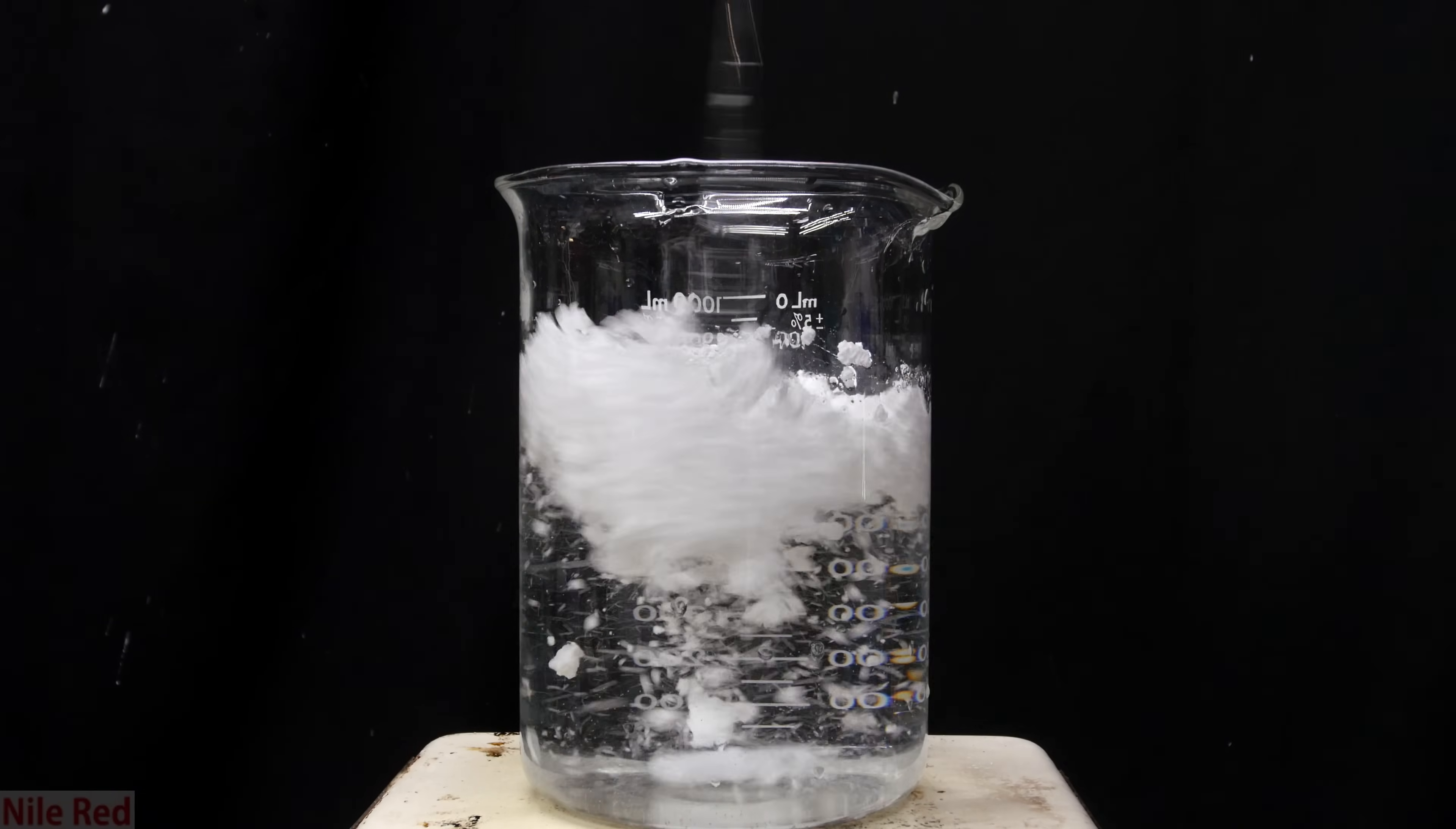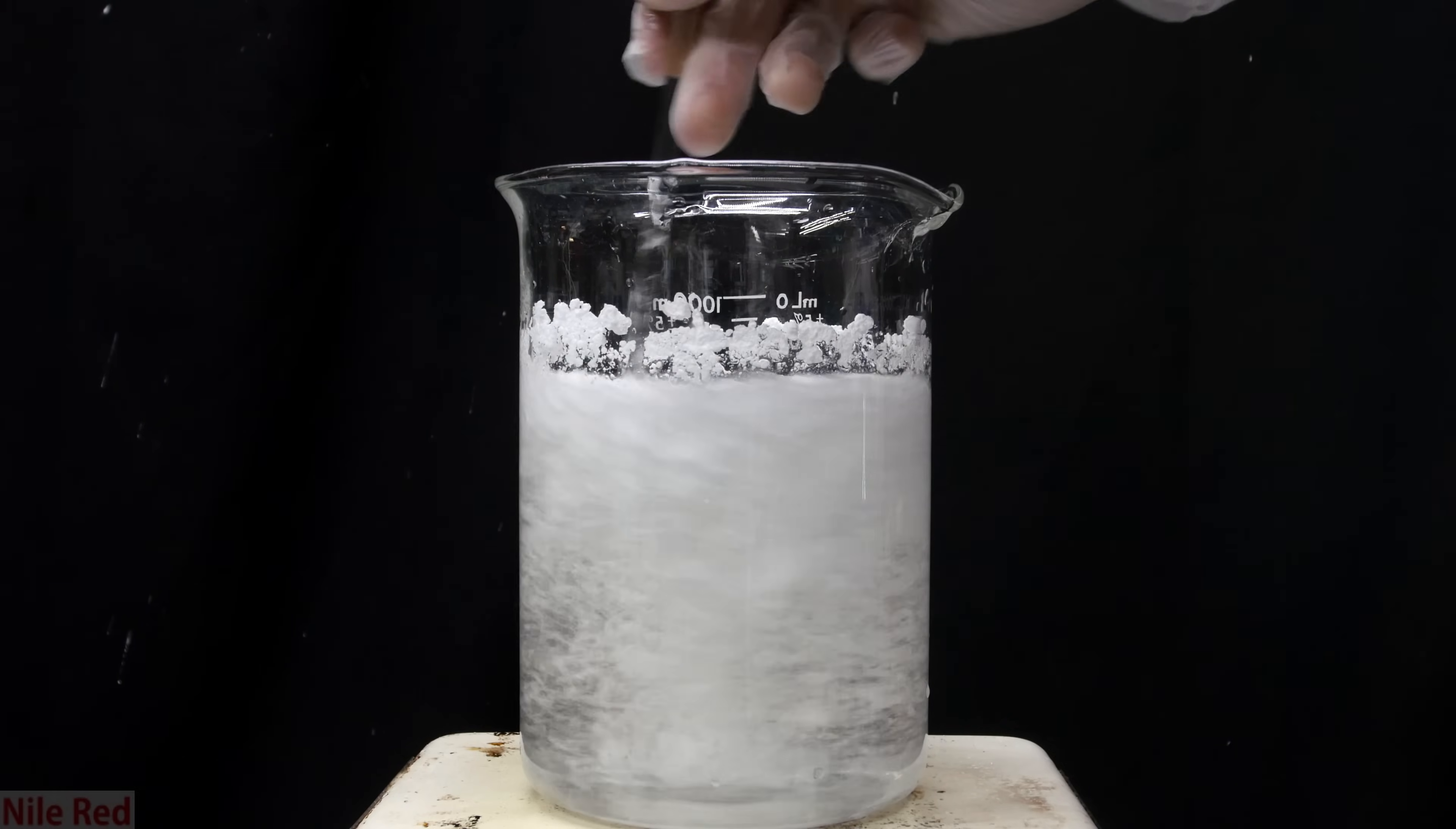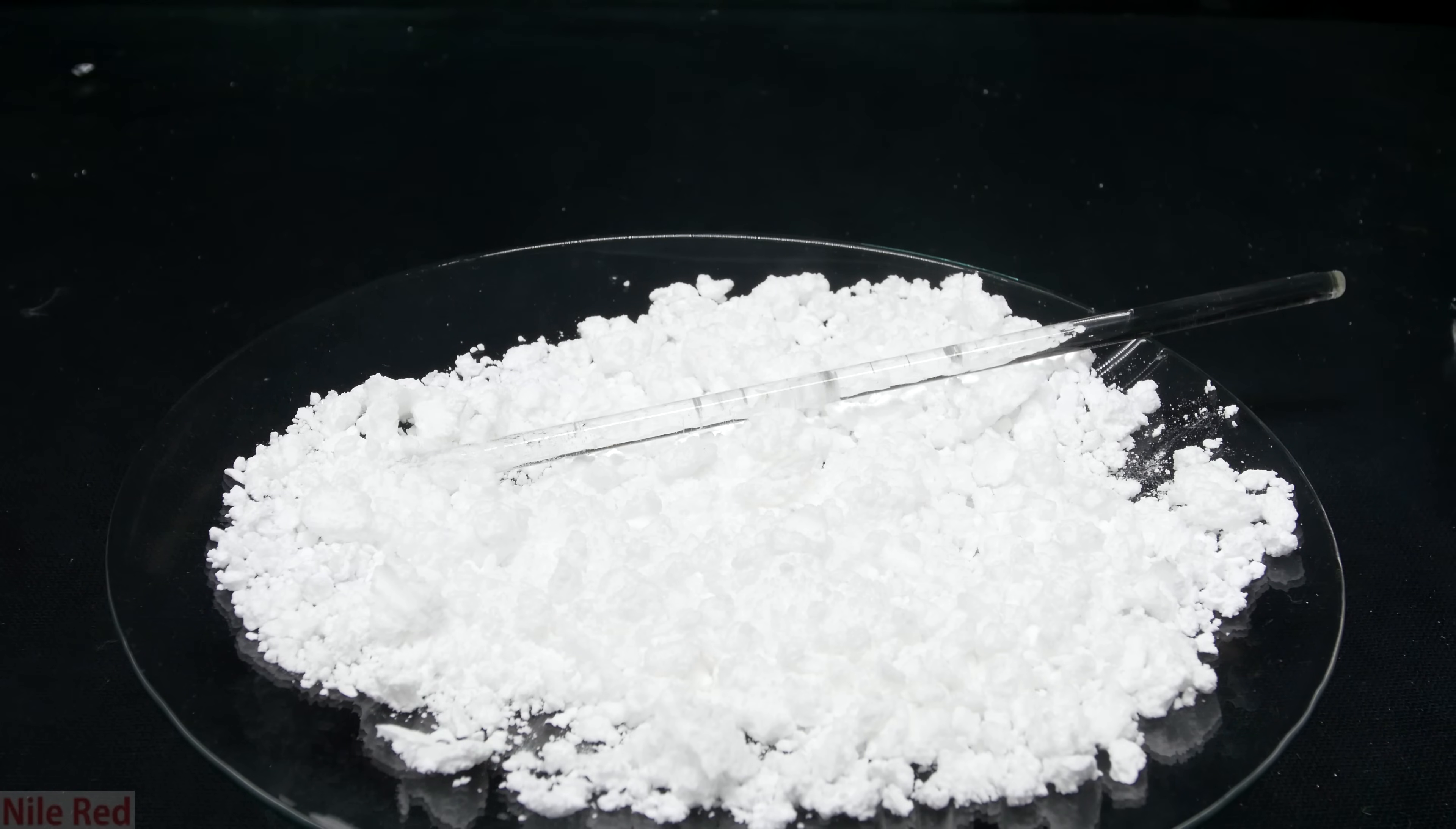The benzoyl chloride can then in turn be used to make something called benzoyl peroxide. Some of you might recognize the name, and this is because benzoyl peroxide is used in a lot of acne creams. It can also be used to bleach teeth and make them whiter, and I think this is just kind of cool.